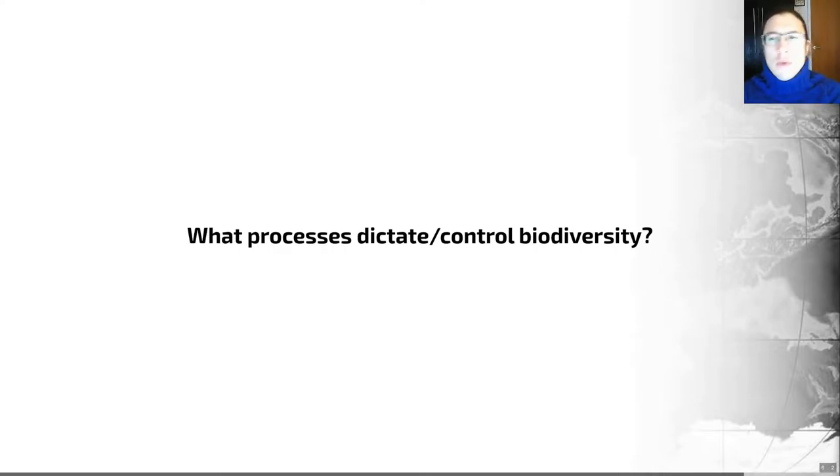If we break biodiversity down into the processes that are responsible for it, we could identify that speciation is the source of biodiversity. If we care about the number of species there are, the process by which species appear, speciation is really a key one to consider.